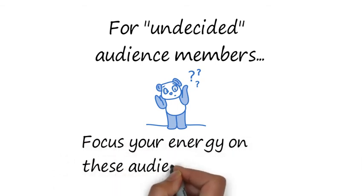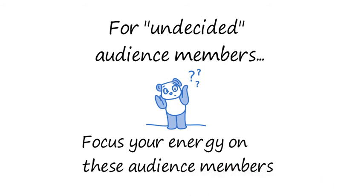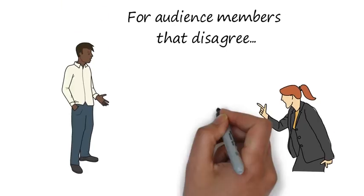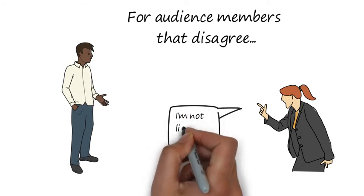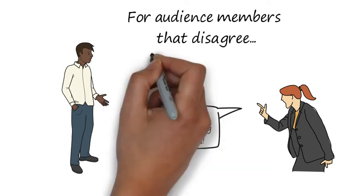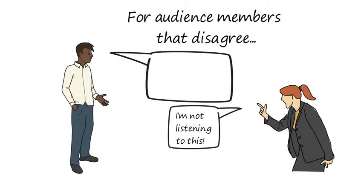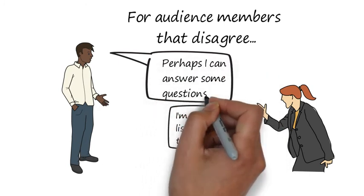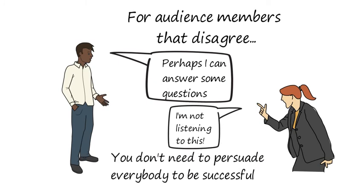With undecided members, you must get the audience sufficiently interested and present unbiased background. But this doesn't mean that you ignore people that disagree with you. For the audience member that already disagrees with your position, your goal is to hope that they ask more questions — only slight change can be expected. You don't need 100% agreement amongst all of your audience members at the end of your speech. Ultimately, what you're trying to do is create change toward the direction that you're asking people to go.